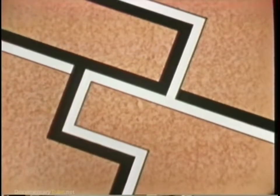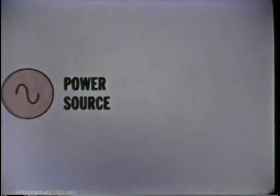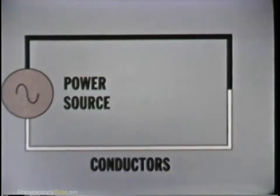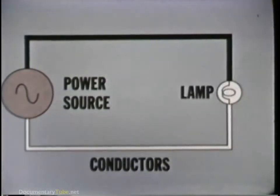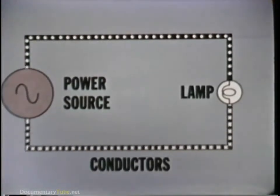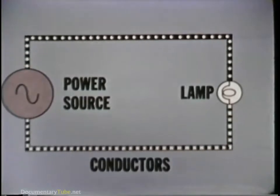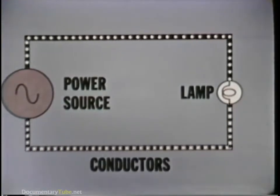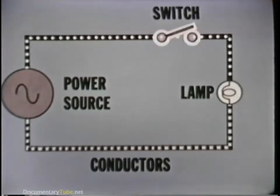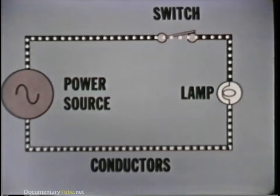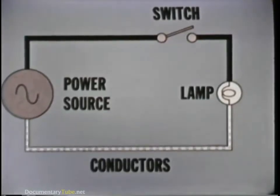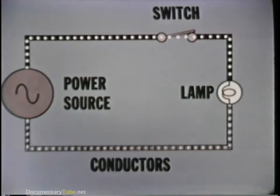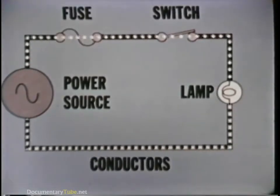An electric circuit is a path or a group of interconnected paths capable of carrying electric currents. An electric circuit exists when the source of power is attached through a pair of conductors to an electrical device, such as a lamp. Current flows from the power source through the conductors to the electrical device. To provide a measure of control, a switch is normally added to turn the circuit off and on. To protect the circuit from damage in the event of trouble, a fuse or circuit breaker is added to the circuit.